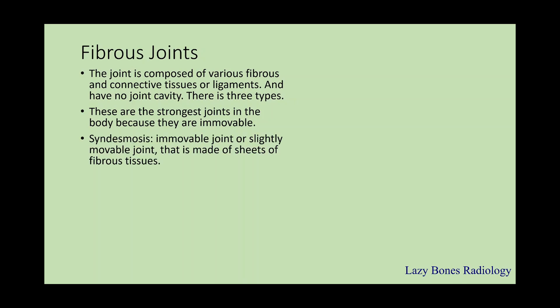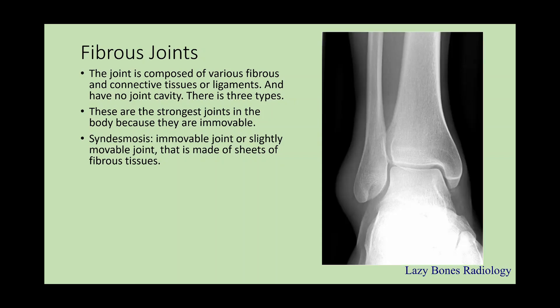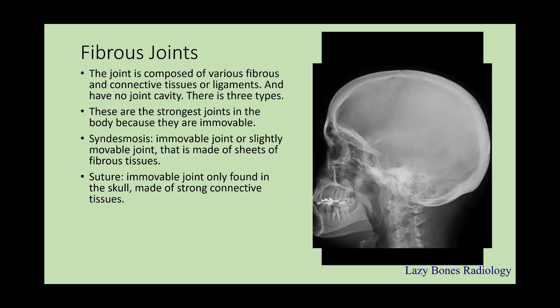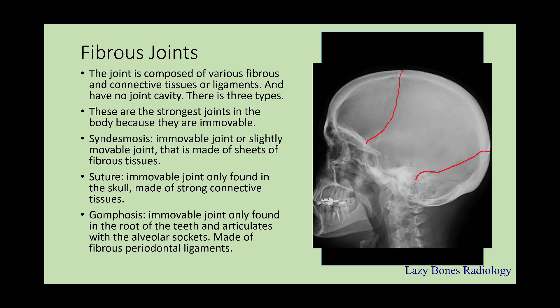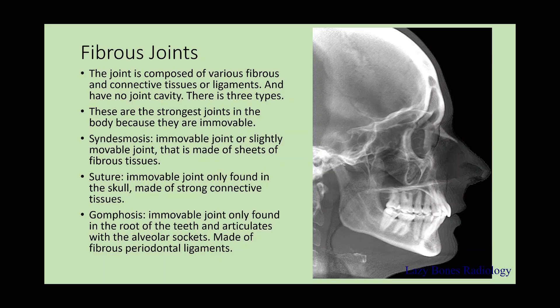Syndesmosis joints are immovable or slightly movable joints made of sheets of fibrous connective tissue — for example, the inferior tibial fibular joint. Next is the suture, which is an immovable joint found only in the skull, made of strong connective tissue, as you can see here. Next is the gomphosis joint, which are immovable joints found only at the root of the teeth that articulate with the alveolar socket, made of fibrous periodontal ligaments, as you can see here in the lateral skull.